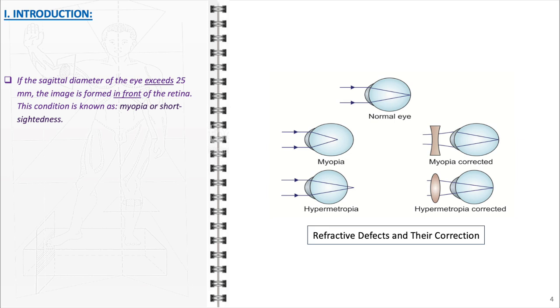However, in myopia, or short-sightedness, shown in the middle-left diagram, the eye's sagittal diameter is longer than normal, causing light to converge in front of the retina. This results in blurred distant vision. The correction for myopia involves using a concave lens, as illustrated in the top right, which diverges the light rays so they can properly focus on the retina.